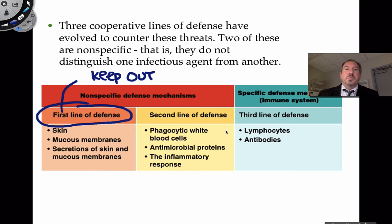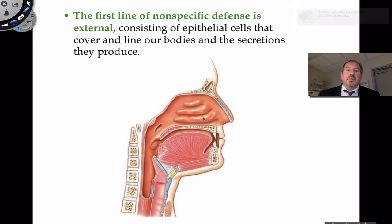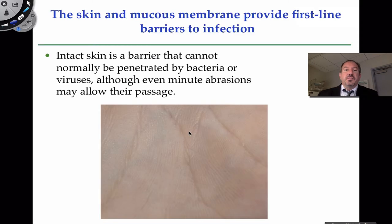In a separate video we'll talk about the specific immune system, or third line of defense. The non-specific defense is sort of external, comprising the epithelial cells that cover and line our body and the secretions that are produced. In the nasal cavity, this is considered the first line of defense — though it's inside the body, we still have the ability to prevent things from penetrating. Our skin and mucous membranes provide the first line of barrier to infection.